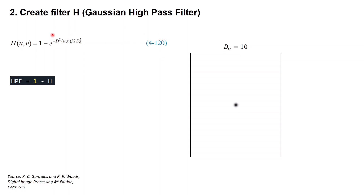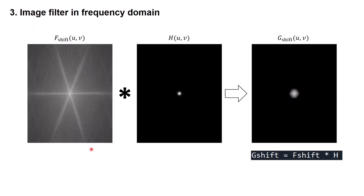Equation 4.120 is the equation of the Gaussian high pass filter — again, you can check the textbook to read more about it. The Gaussian high pass filter is simply one minus the Gaussian low pass filter, so in Python we just need to type one minus our Gaussian low pass filter variable H. Here is our Gaussian high pass filter with parameter D0 equal to 10.